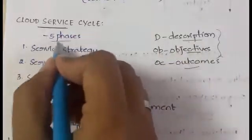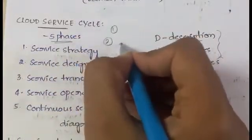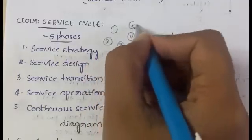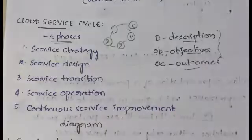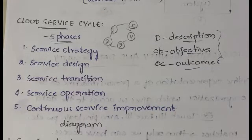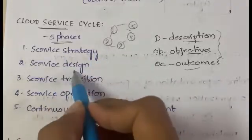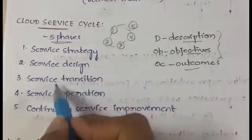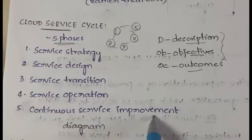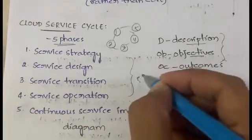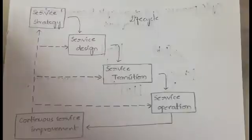The cloud service life cycle has a total of five phases. These five phases are all related to each other and they form a cyclic structure. The five phases are: service strategy, service design, service transition, service operation, and continuous service improvement.